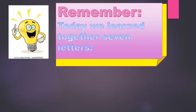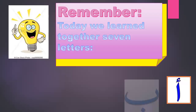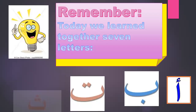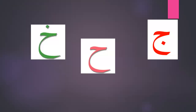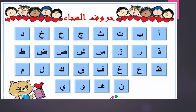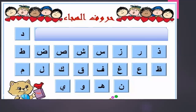Remember, today we learned seven letters: Aleph, Ba, Ta, Sa, Jim, Ha, and Kha. The Arabic alphabet has 28 letters and today we started seven. In sha Allah, in the next videos we will continue studying the alphabet.